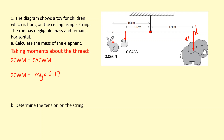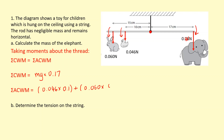That's the only clockwise moment. The duck and rabbit create anticlockwise moments. The sum of anticlockwise moments: starting with the duck, that's 0.046 times 0.1 meters, and adding the moment from the rabbit, 0.060 times 0.15 meters.